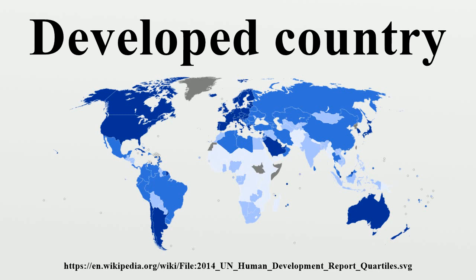Newsweek published in 2010 a list of the World's Best Countries, measuring Education, Health, Quality of Life, Economic Dynamism, and Political Environment in 100 countries. The top 30 countries are: Finland, Switzerland, Sweden, Australia, Luxembourg, Norway, Canada, Netherlands, Japan, Denmark, United States, Germany, New Zealand, United Kingdom, South Korea, France, Ireland, Austria, Belgium, Singapore, Spain, Israel, Italy, Slovenia, Czech Republic, Greece, Portugal, Croatia, Poland, Chile.